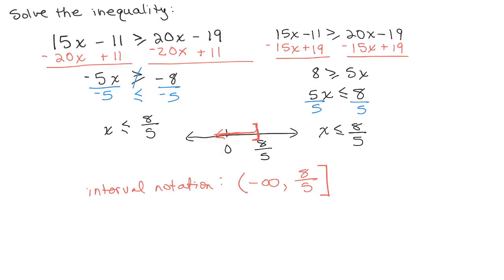Another way you may have seen this graph not doing interval notation is you would put 0 and 8 fifths again, but instead of using the bracket, I like the bracket because it goes along with interval notation.